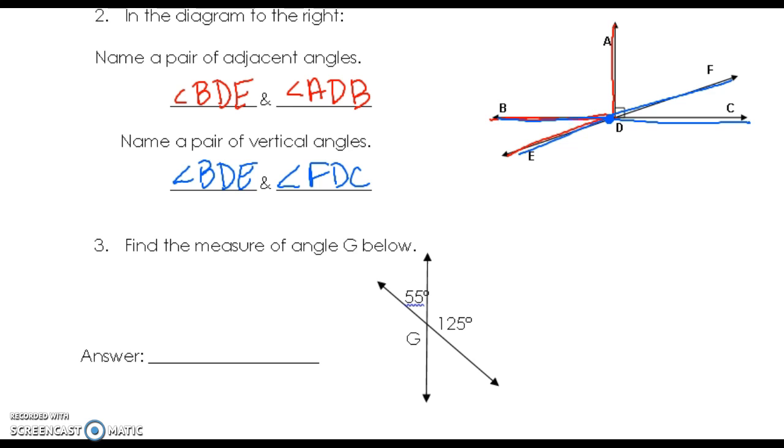All right, find the measure of G below. Well, G and 55 are supplementary because they form a straight line, so I can do 55 plus G equals 180 and solve. But G and 125 are vertical angles, which means whatever G is, its vertical angle is the same thing. So G equals 125 degrees.